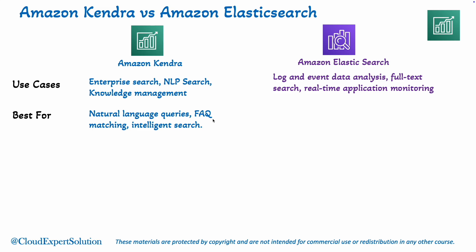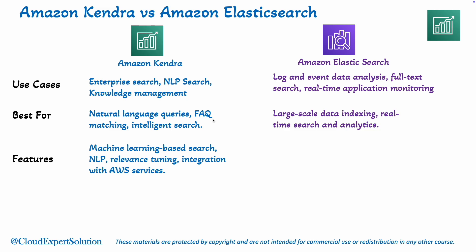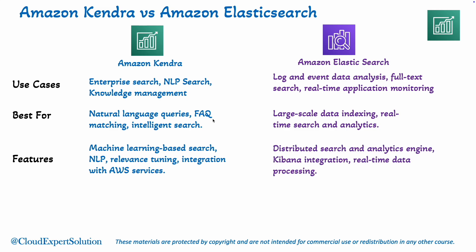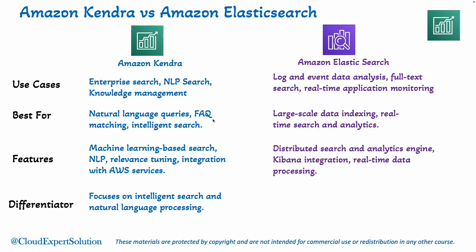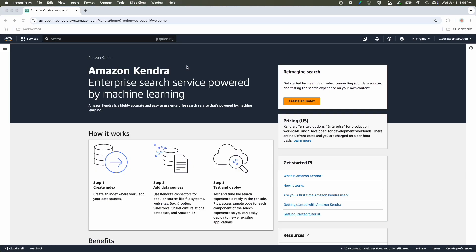Amazon Kendra is best suited for natural language queries, FAQ matching, and intelligent search, whereas Amazon Elastic Search is best suited for large-scale data indexing, real-time search, and analytics. In terms of main features, Amazon Kendra has a machine learning-based search engine with NLP, natural language processing, and relevance tuning, whereas Amazon Elastic Search is a distributed search and analytics engine. If you want Kibana integration or real-time data processing, then Amazon Elastic Search is the answer. As a differentiator, Amazon Kendra focuses on intelligent search and natural language processing, whereas Amazon Elastic Search is optimized for large-scale data indexing and real-time analytics.